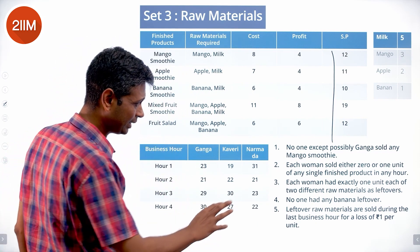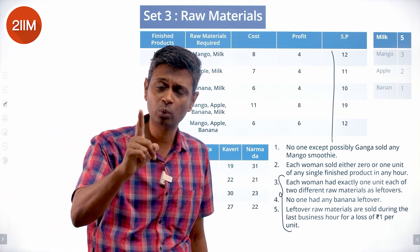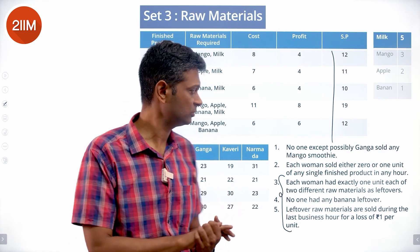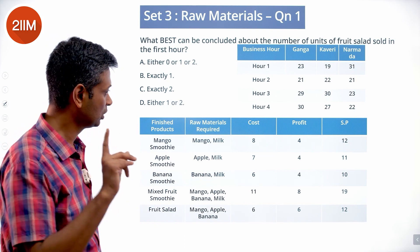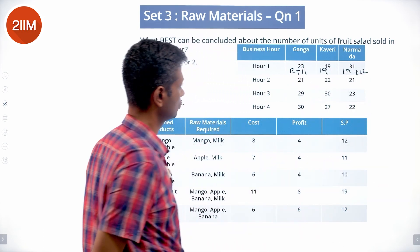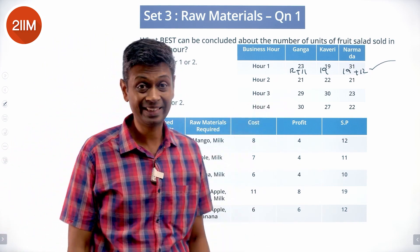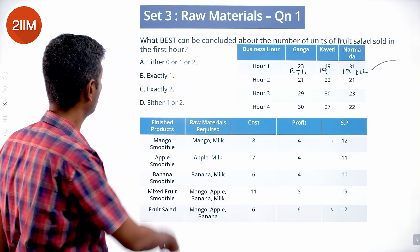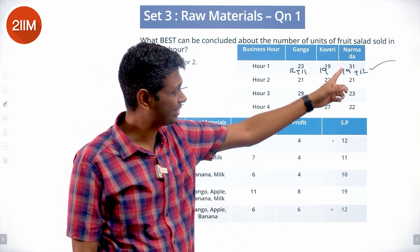Now the leftover part. No one had any banana leftover; each had exactly one unit of two raw materials left over. So the combinations are milk and mango, milk and apple, or mango and apple. For the first hour question — what is the number of fruit salads sold? Narmada's 31 = 19+12, and that 12 is definitely fruit salad since Narmada cannot sell mango smoothie. Ganga's 23 = 12+11, where the 12 could be mango smoothie or fruit salad. So the answer is 1 or 2.